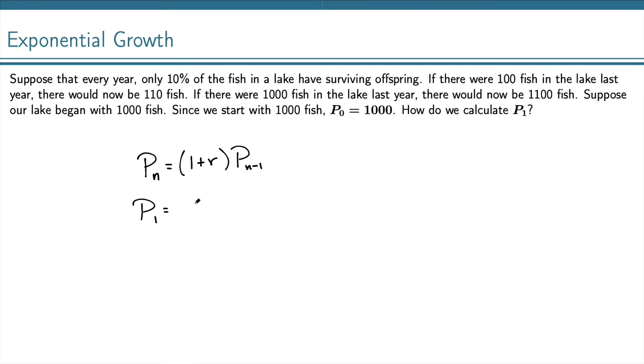P sub 1, then, is equal to 1 plus 10% as a decimal, which is 0.1, times P sub 0. Well, that's 1.1 times the P0, which is 1,000. 1.1 times 1,000 is 1,100.